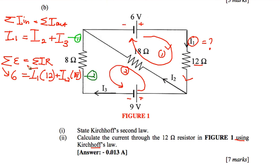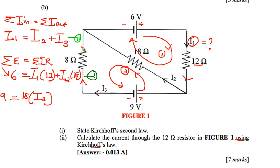For the second loop, start from the 9-volt battery. The current I2 flows through the 18-ohm resistor in the same direction as the loop, giving a voltage drop of I2 times 18 ohms. However, I3 flows upward, which is the opposite direction to this loop, so you must use a negative sign: negative I3 times the 8-ohm resistor. This is equation number three.